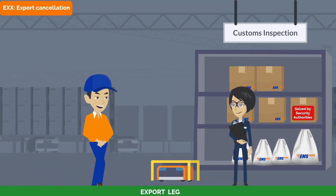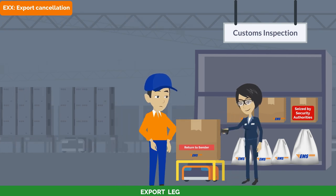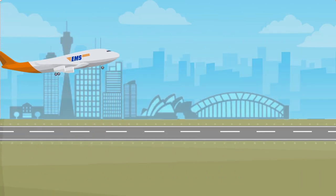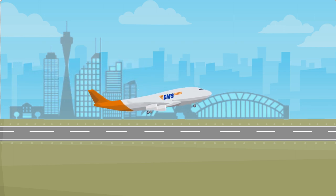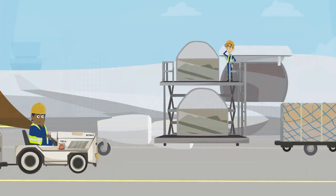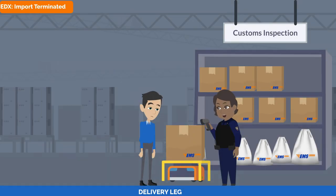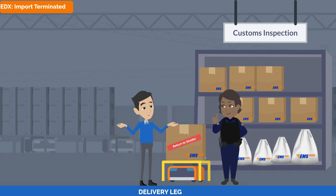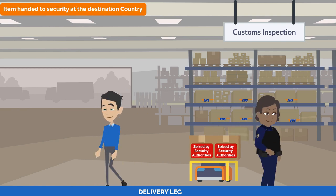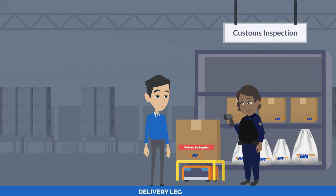The EXX event is made when the EMS item will no longer be exported and will be either returned to the sender or seized by security authorities. Moving to the import leg, there are similarly additional events to inform customers about the status of their items. The EDX scan — import terminated — is used when it is decided that there will be no delivery to the addressee. The most common situations are when the item is seized by Customs or Security and will be destroyed, or when it will be returned to the origin without a delivery attempt.